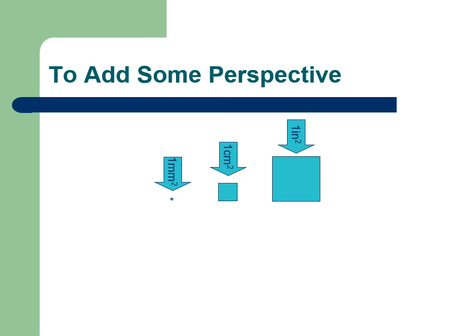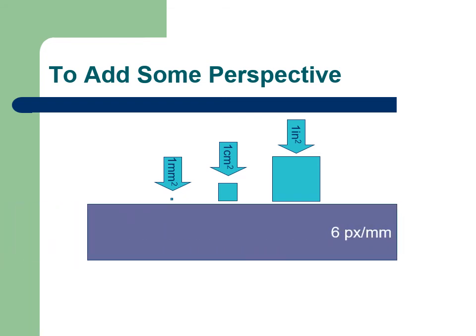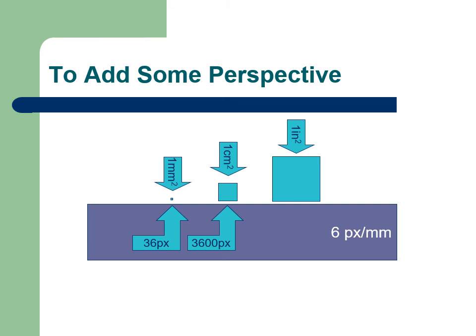To add some scale to this discussion, below are three boxes. The first square is a millimeter in size, the next a square centimeter, and the last a square inch. The first square would contain about 36 pixels. The second square is one centimeter by one centimeter — 100 times larger than the previous square — and therefore contains 3,600 pixels. The third square is one inch and contains 23,226 pixels.